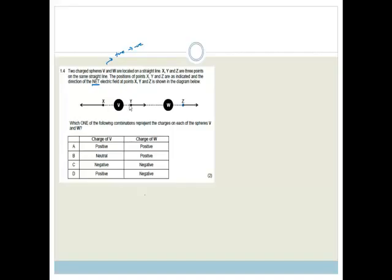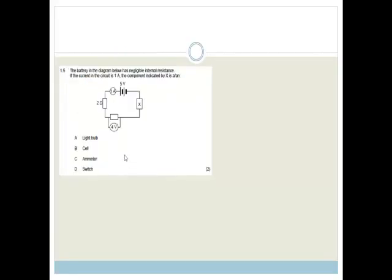Which one of the following combinations represents the charges on each of the spheres, V and W? Do you agree that since it's going away from Z, and it's supposed to be from positive to negative, if it was going from positive to negative, then I would say he has to be positive, and then W should be positive as well. The other option, and there it is, positive and positive. The answer is positive and positive.